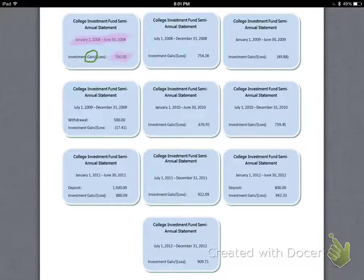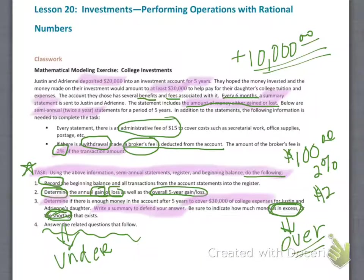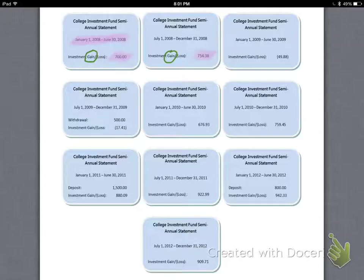There's a gain of $700. Looking at the second statement to the right, there's another gain of $754.38. Remember, because we'll do the first six months entries together, what they said: there's always going to be this administrative fee. So that's going to be a withdrawal of $15 every single six-month period.